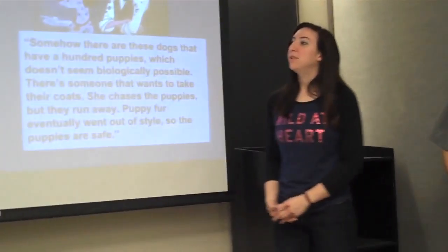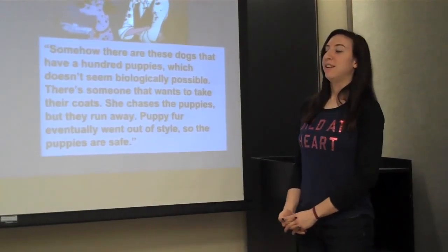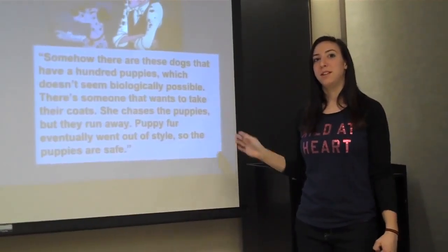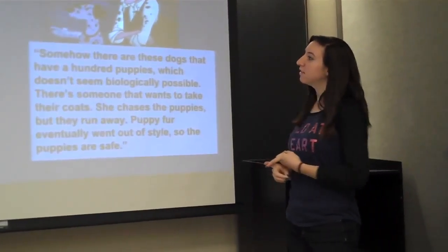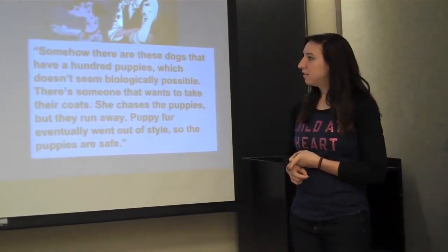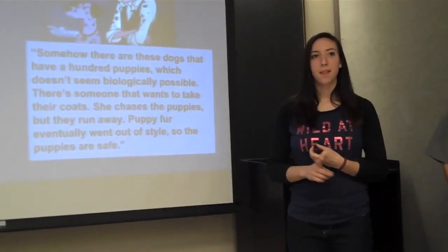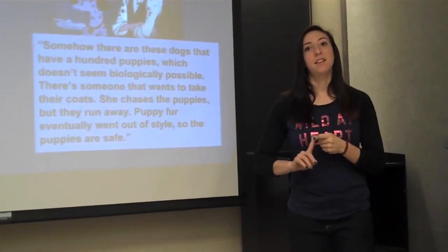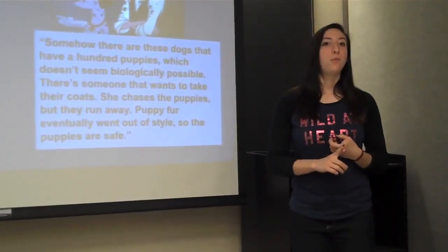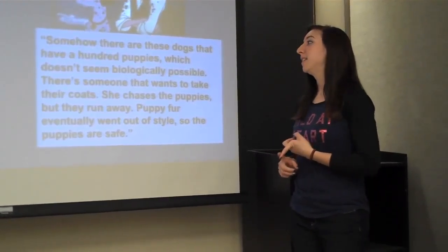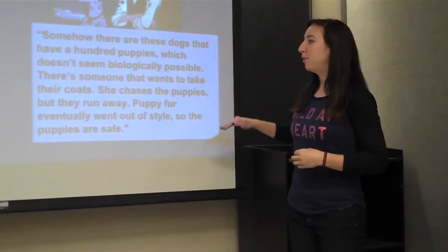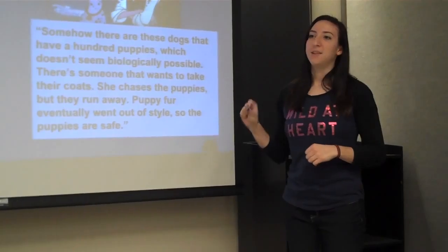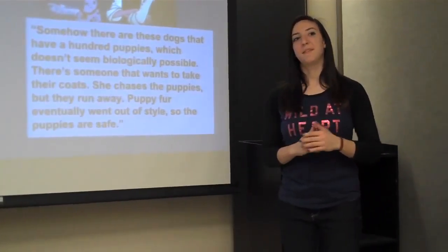I included a couple of examples of really bad summaries to show you what not to do. Read this one — it's a little shorter — and give me a couple ideas of what's wrong with it as a summary. One thing is there are no characters' names. In summaries, especially of stories, one very important thing is to have the main characters' names at least. And the whole plot in the summary is completely wrong. But it gives you a little bit of an idea of what the story is, so it still is considered a summary, even though it's a really bad one.